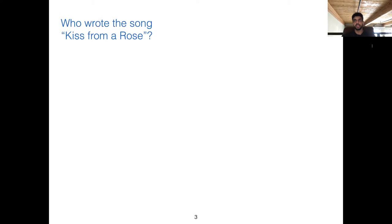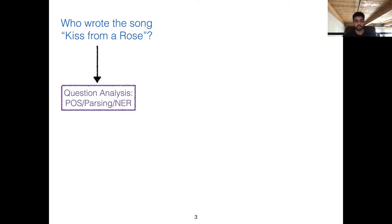Let's move on to our topic of the day: question answering. At a very high level, the way this task used to be approached before neural networks took over NLP was to design a bunch of different modules each responsible for a small sub-component of the overall task. For a question like 'Who wrote the song Kiss from a Rose,' you might first do part-of-speech tagging, parse the sentence, and detect named entities so you can look them up in some external knowledge base.